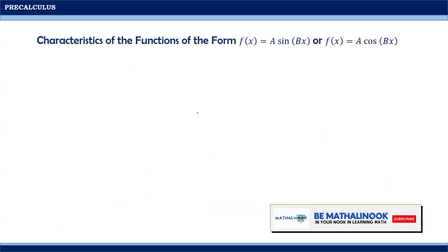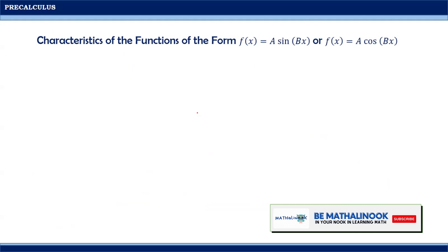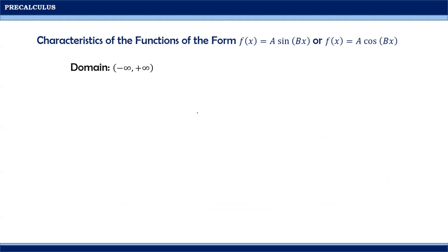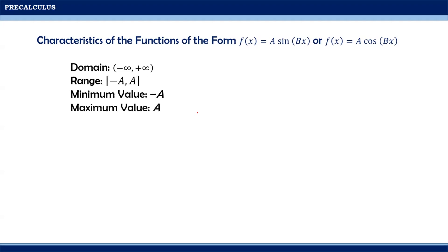The characteristics of functions of the form f(x) = a·sine(bx) or f(x) = a·cosine(bx) are: the domain is from negative infinity to positive infinity; the range is from -a to a; the minimum value is -a; the maximum value is a; and the period is 2π/b.